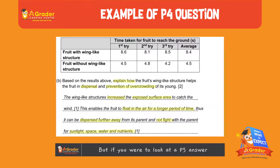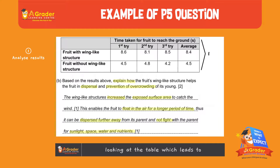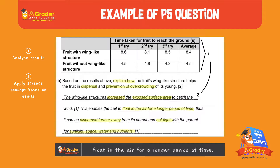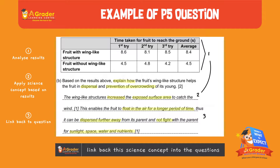But if you were to look at a typical P5 question, it requires three steps. Number one, looking at the table, which leads to increased exposed surface area. Second, they have to apply the science concept — exposed surface area will lead to being able to float in the air for a longer period of time. And the third step, you have to actually link back this science concept into the question, which asks about dispersal.